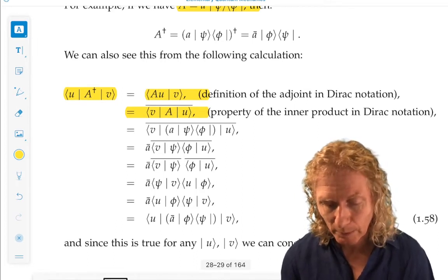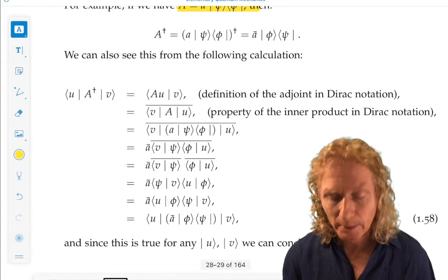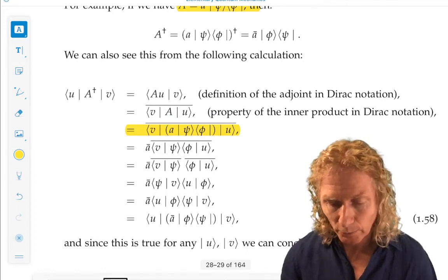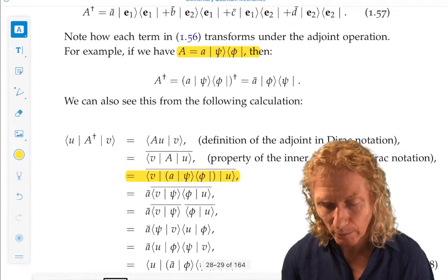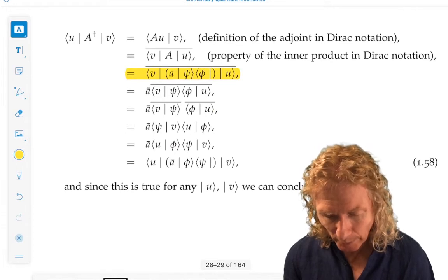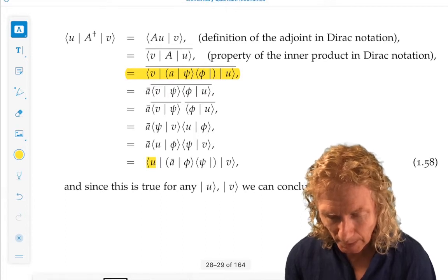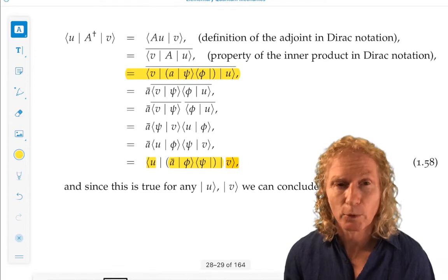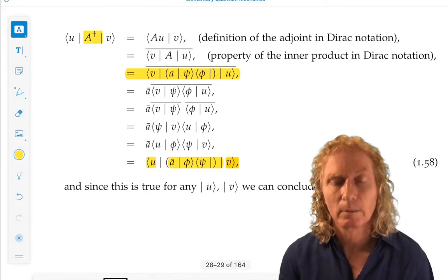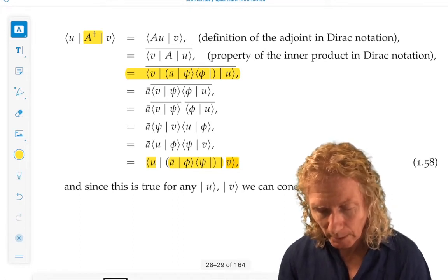I go from the first line to the second line. And then, from that point on, we just substitute in the value of A that we chose, or the expression for A that we chose above. And we go through these calculations, and we end up with Bra U Ket V. And in between, we have this operator. Since this is true for every U, V, we can identify the adjoint of A with a-bar, Ket Phi, Bra Psi.